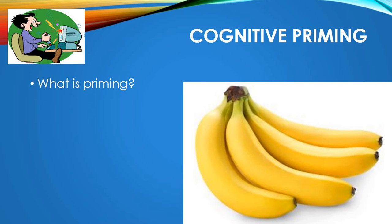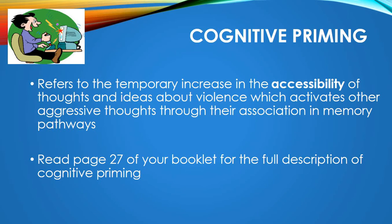What we can then do with that unusual example is apply it to aggression. When we think about cognitive priming, aggression, and media violence, it refers to the temporary increase in the accessibility of thoughts and ideas about violence, which in turn activates other aggressive thoughts through their association in memory pathways. It's quite a broad definition — we're going to unpick that in more detail in the booklet.